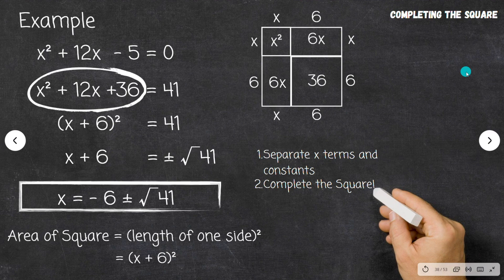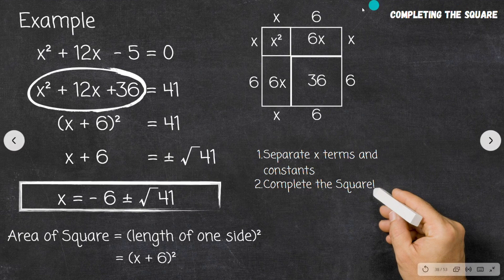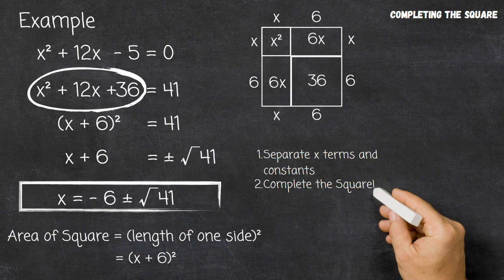So I hope that was very clear and gave you some deeper understanding into why we call this method completing the square, along with the visual representation of what we're actually doing and how we construct that perfect square. Join me again for another video explaining various mathematical concepts in very simple ways, and please consider liking the video and subscribing to the channel.